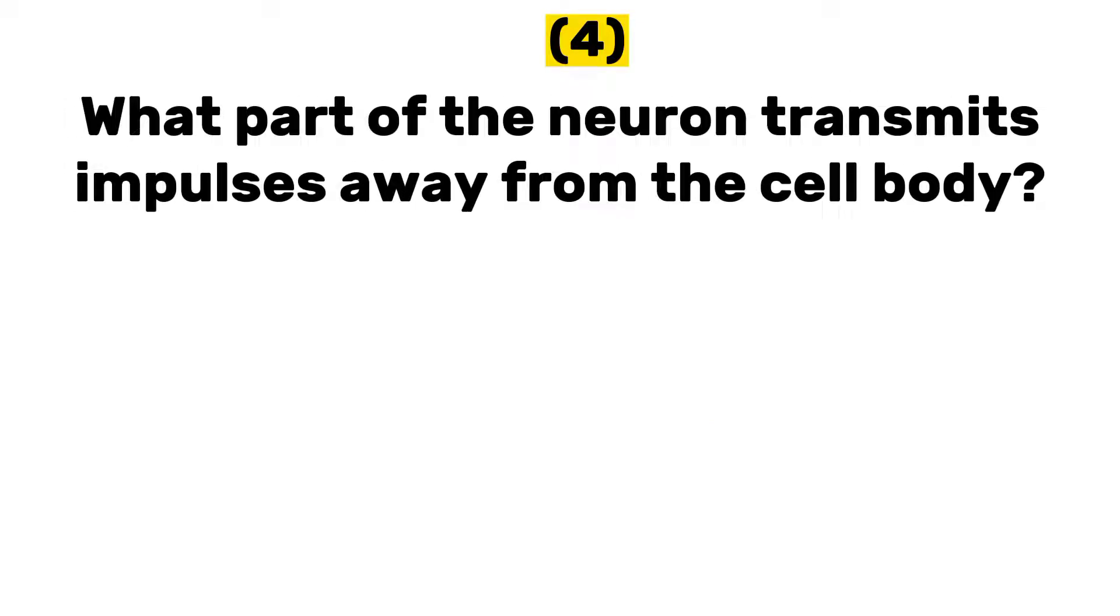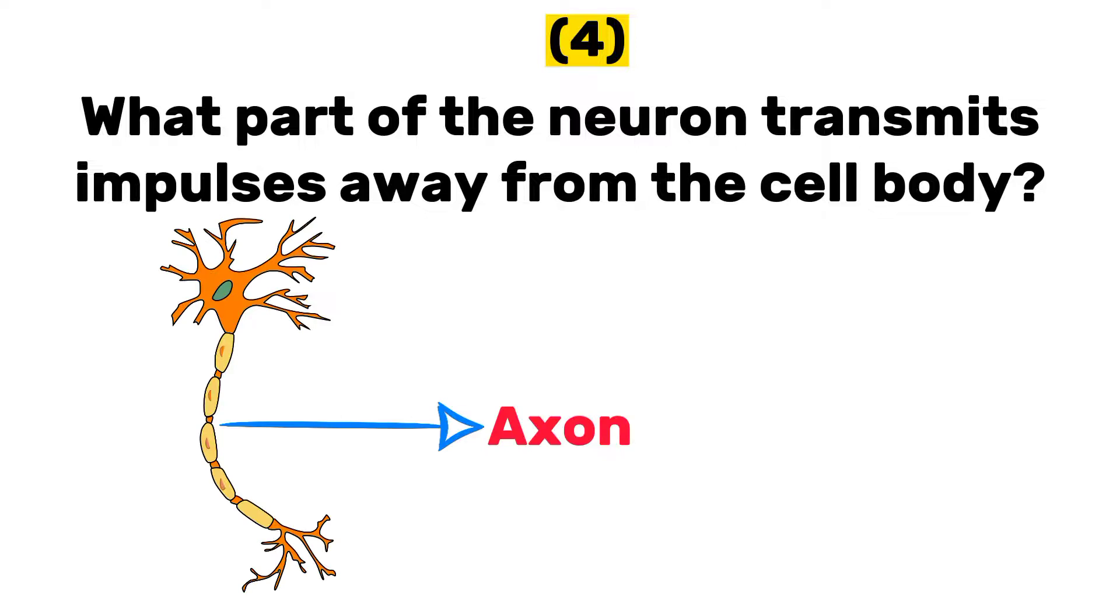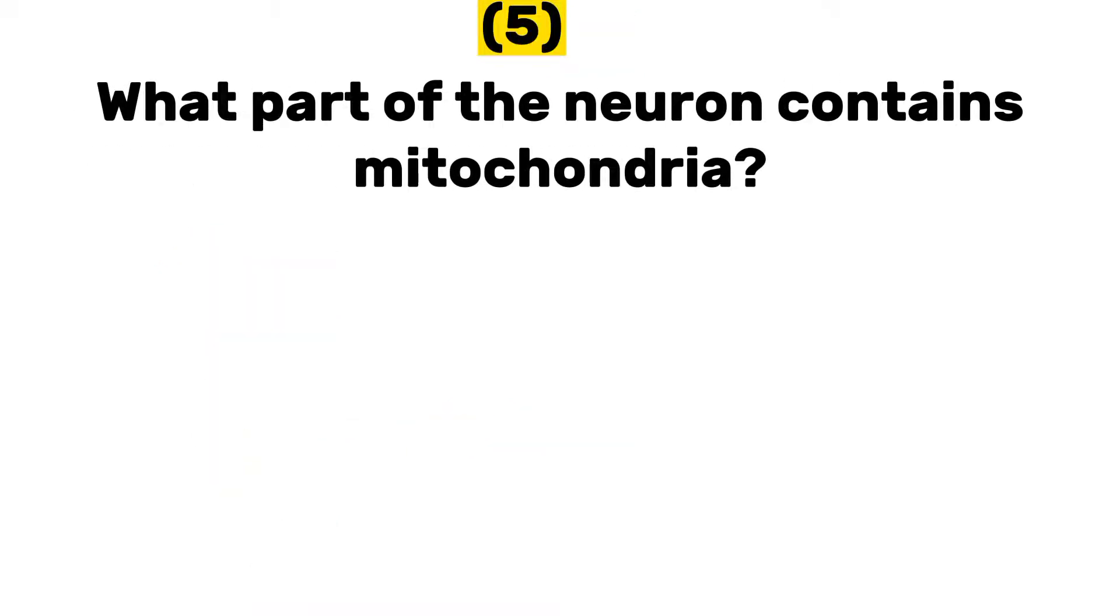Axon. So the axon transmits impulses away from the cell body, while the dendrites transmit impulses towards the cell body. Number five: what part of the neuron contains mitochondria?